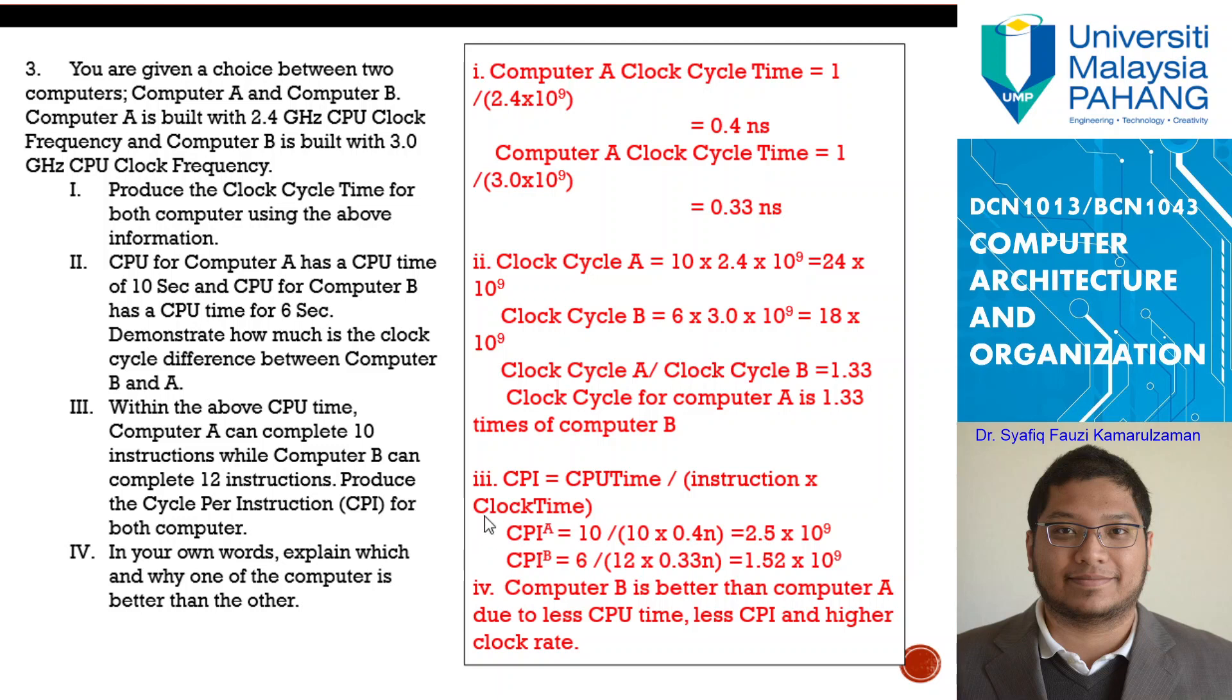CPI A is equal to 10 times 0.4 nano, is equal to 2.5 times 10 power of 9 cycle per instruction. Here in this case, second, for B is 6. So 6, 10 and 6, where do you get them? Here, at the top here, from question number 2. 6 is equal, divided by 12 times 0.33 nano. Here 0.4, 0.33 is what you did in question 1. And you get the answer here.